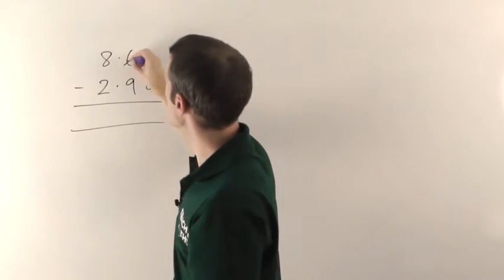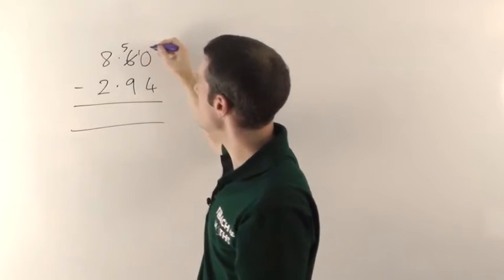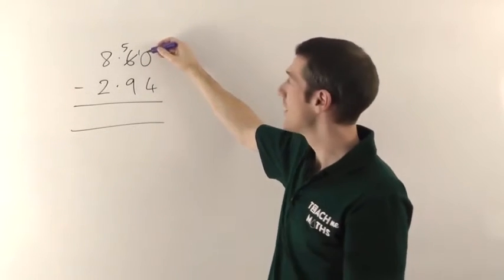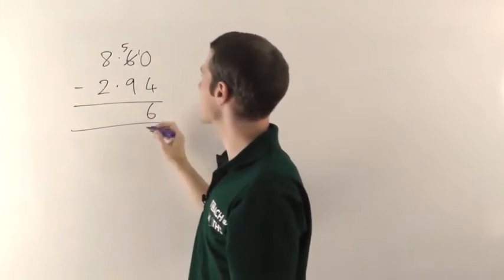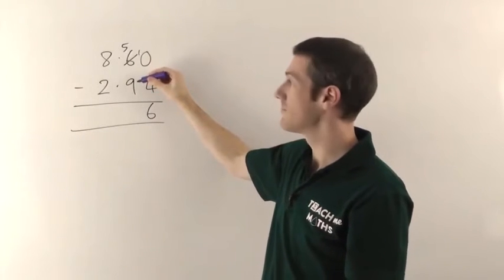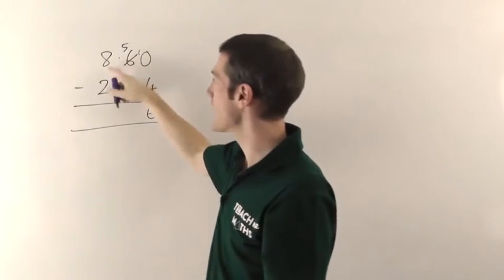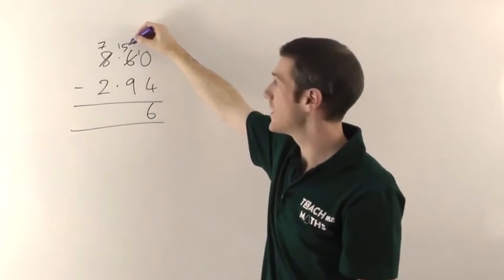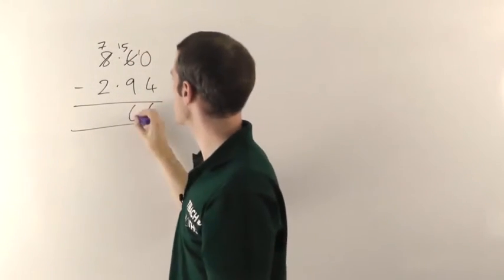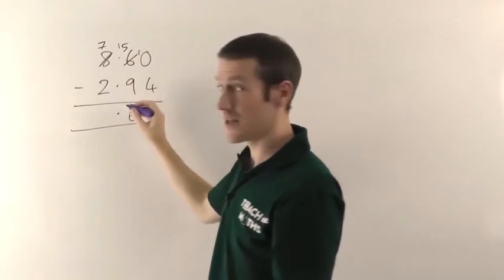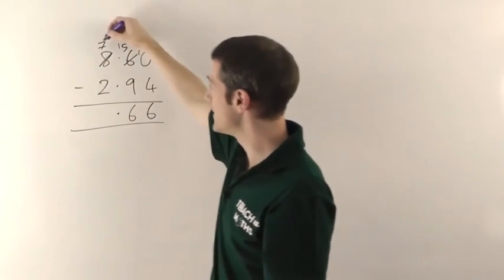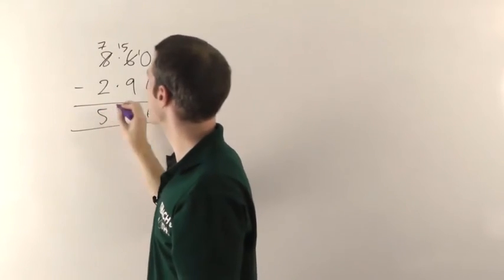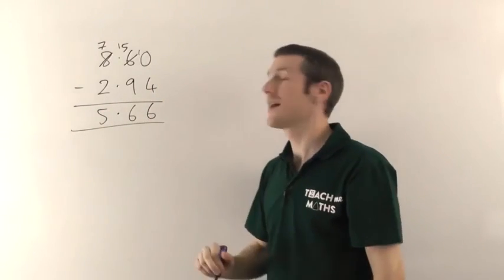Nothing minus 4—we can't do that, so you borrow from the 6. Knock the 6 down by 1, put the 1 there. That makes the 0 into a 10. 10 minus 4 gives you 6. 5 minus 9—can't do that either, so we borrow from the 8. Knock it down by 1, put your 1 there. 5 goes to 15. 15 minus 9 gives you 6. Decimal point sits underneath just like for addition. 7 minus 2 gives you 5, so the final answer there is 5.66.